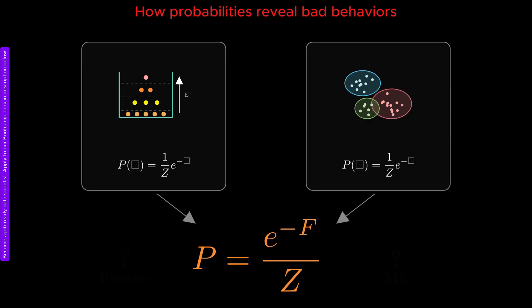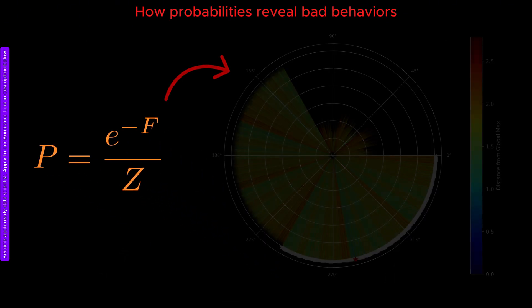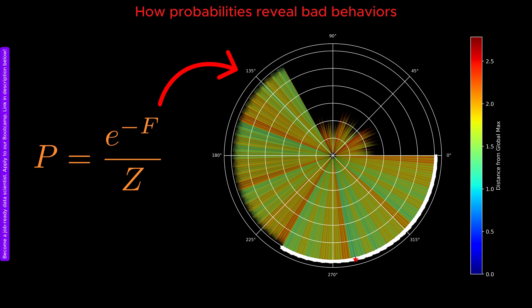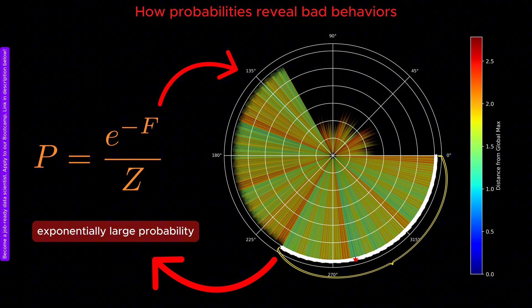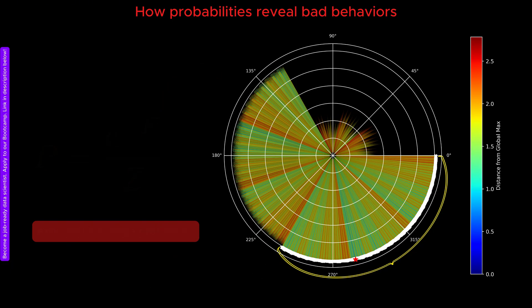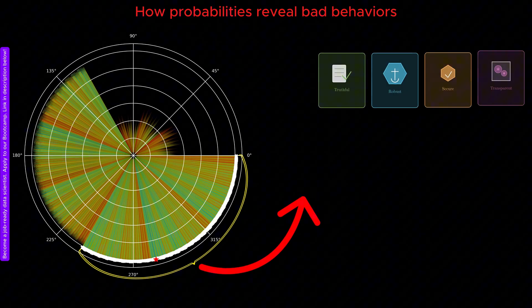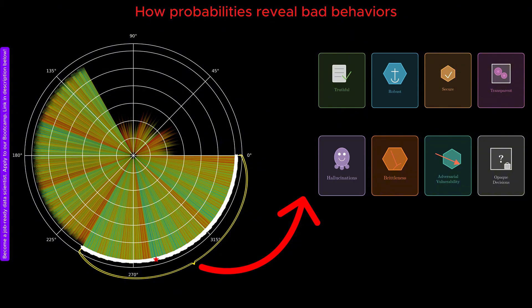Z is a normalization constant and F is the effective free energy. It is a function defined over a high-dimensional space of states. Crucially, the function F usually has multiple minima. These minima correspond to regions where the probability is exponentially larger than elsewhere. In practical terms, these are the outputs or behaviors of the model that are astronomically more likely to occur.